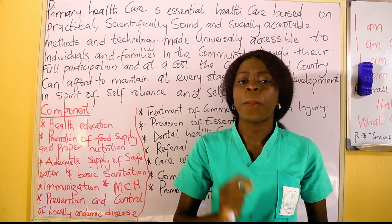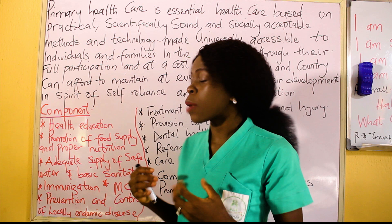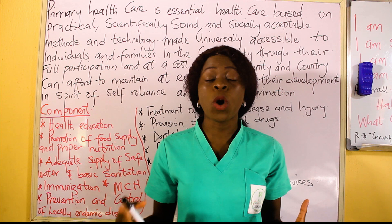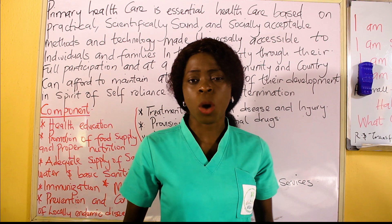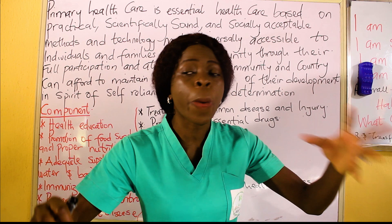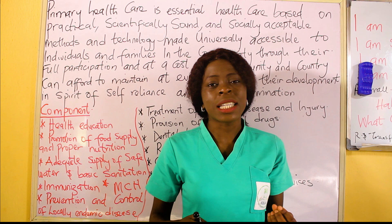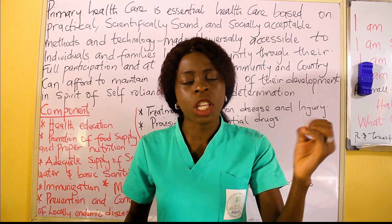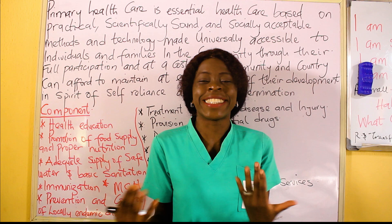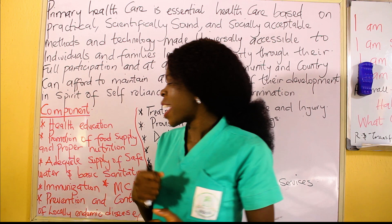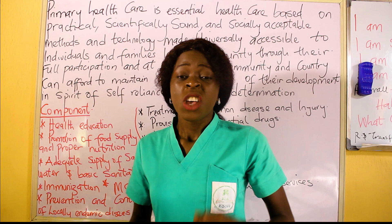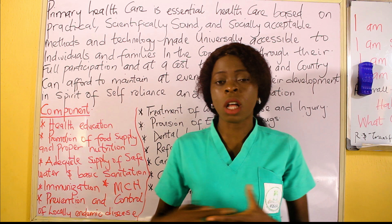The second component is promotion of food supply and proper nutrition. It is the duty of a community health nurse to promote food supply — for example, telling villagers to plant vegetables and fruits around their homes, small gardens they can rely on. Most people in rural areas enjoy fresh vegetables and fruits compared to urban areas. You also have to educate them not to overcook vegetables and to wash fruits with salt and water.